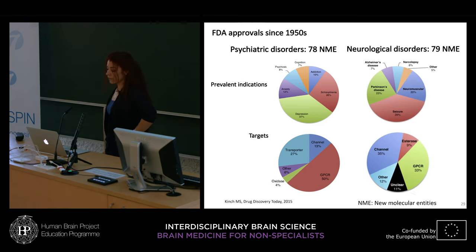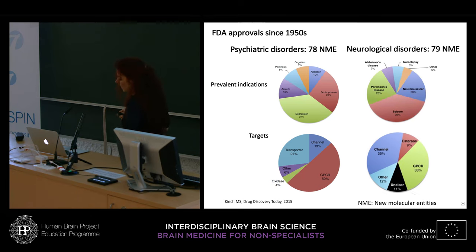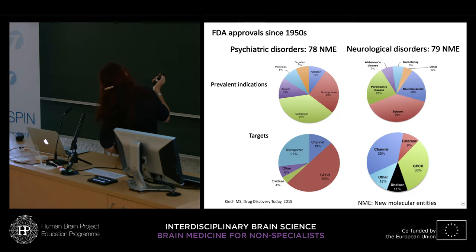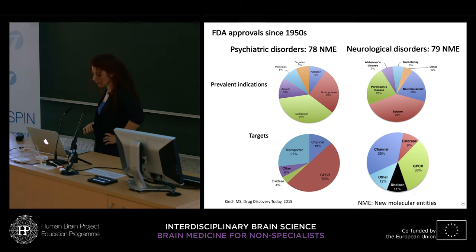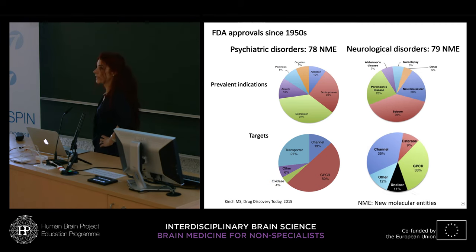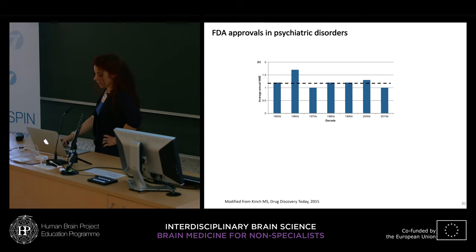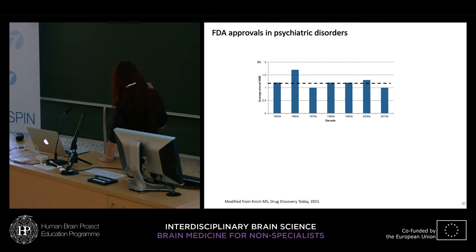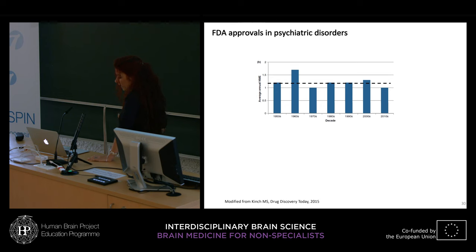In neurological disorders, also only 79 new molecular entities were approved. The main prevalent indications were seizures including epilepsy and Parkinson's disease, followed by neuromuscular diseases. GPCR receptors and channels were the main targets studied. Importantly, a portion of drugs have an unclear mechanism of action even when they are effective. Looking at the average number of new molecular entities over the last 70 years, there has been approximately one approval per year for both psychiatric and neurological disorders.